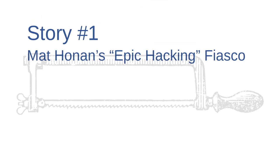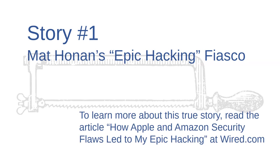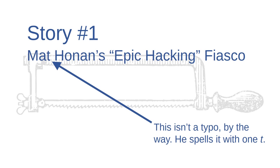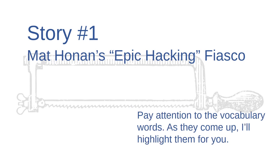The first story I'm going to tell you is true. It's about a journalist named Matt Honan who was hacked by an anonymous cybercriminal. You can read about it in more depth at Wired.com. The story there is titled 'How Apple and Amazon Security Flaws Led to My Epic Hacking.' He spells Matt with one T. Pay attention to the vocabulary words — as they come up, I'll highlight them for you.